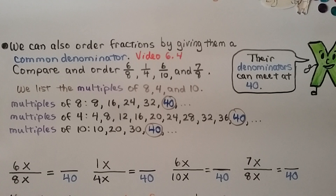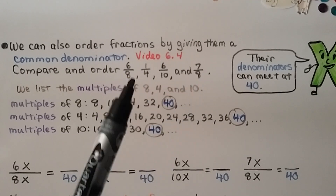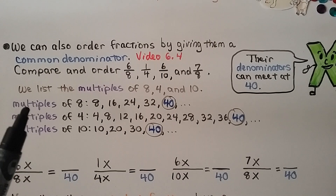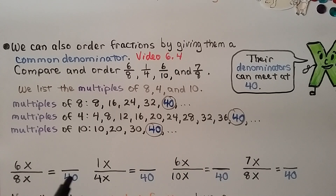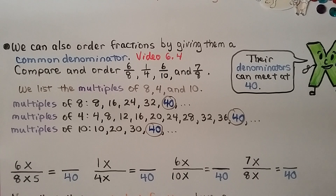We can also order fractions by giving them a common denominator, which we learned in video 6.4. To compare and order six-eighths, one-fourth, six-tenths, and seven-eighths, we list the multiples of eight, four, and ten. The denominators can meet at 40, so that's the common denominator. For six-eighths: eight times five is 40, so we multiply the numerator by five too — six-eighths becomes thirty-fortieths. For one-fourth: four times ten is 40, so the numerator is multiplied by ten — one-fourth becomes ten-fortieths.